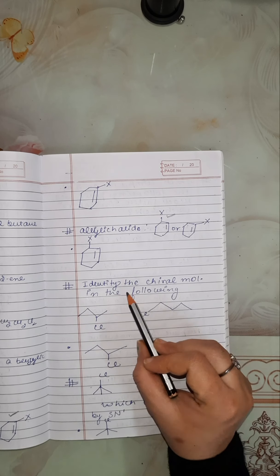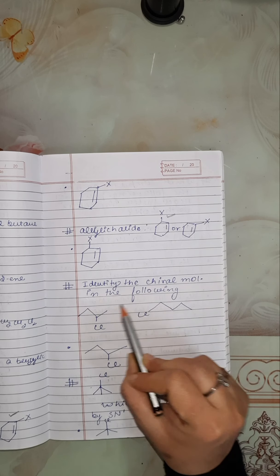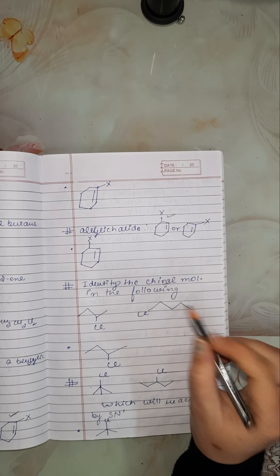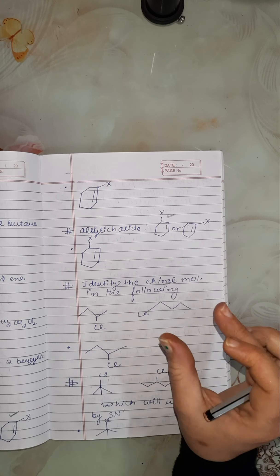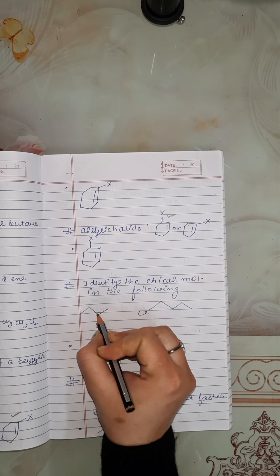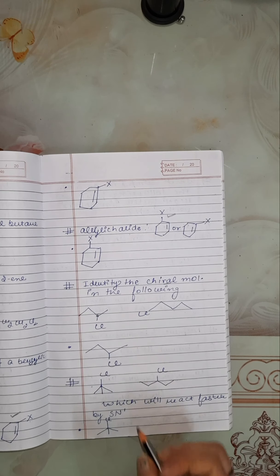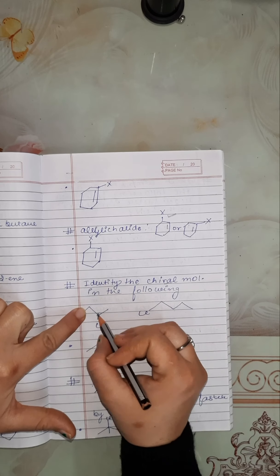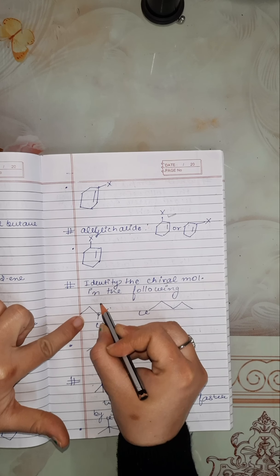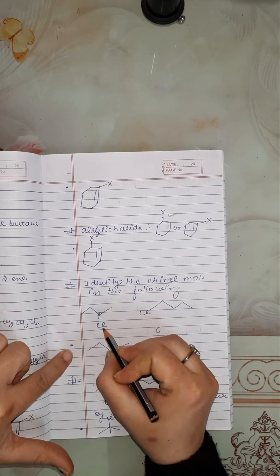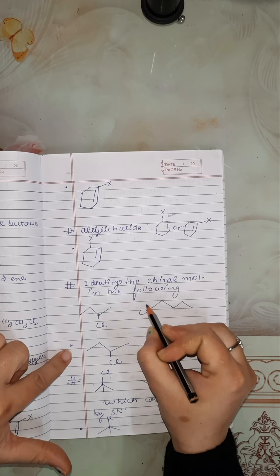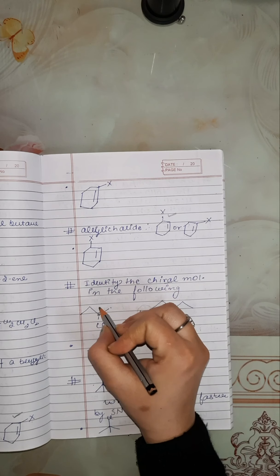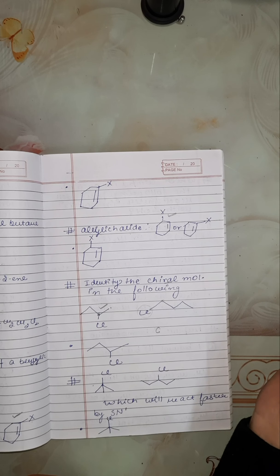Next is: identify the chiral molecule in the following. Chiral means that all the groups attached to the carbon should be different. As you can see, with this carbon: one CH2 is attached, CH3 is attached, one H is attached, and one Cl is attached. Here Cl is attached and another CH2 group is also attached. So this will be the chiral molecule.